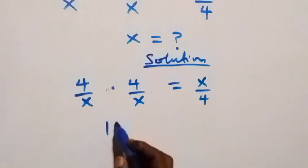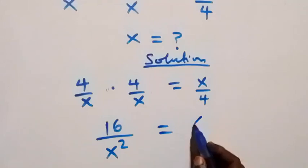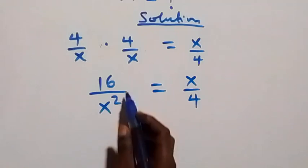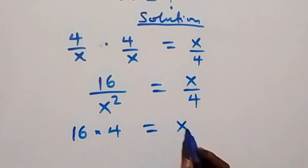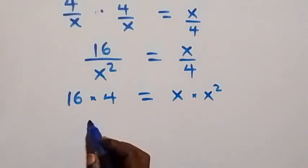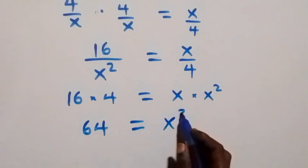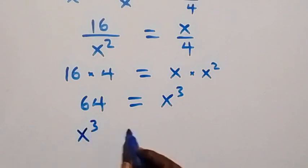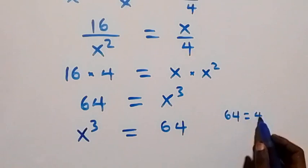4 times 4 is 16, over x times x that's x squared, equals x/4. We cross multiply and we have 16 times 4 equals x times x squared, that is 16 times 4 is 64, equals x times x squared, which is x raised to power 3.